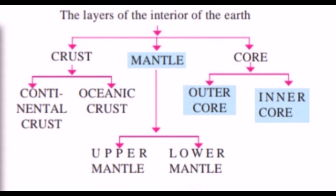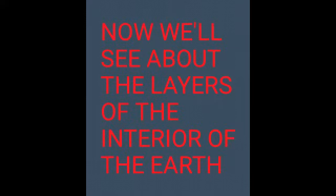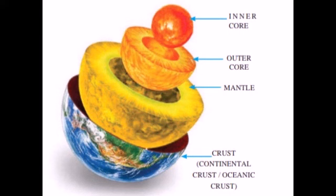See this diagram — I will explain it to you at the end of the video. Now we are going to see about the layers of the interior of the earth. There are three layers. The uppermost layer is called the crust, divided into two sub-layers: continental crust and oceanic crust. The layer below the crust is called the mantle, divided into upper mantle and lower mantle. Below the mantle is the core, also divided into outer core and inner core.